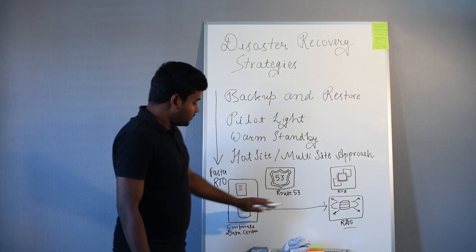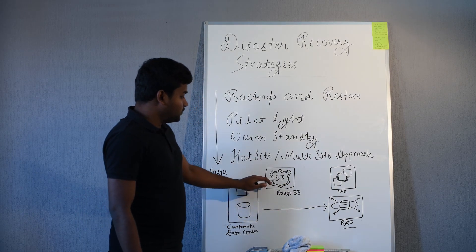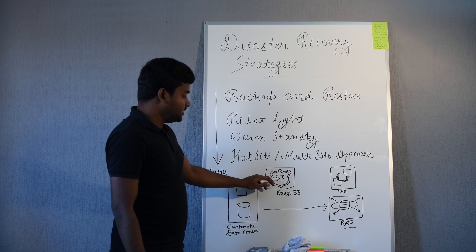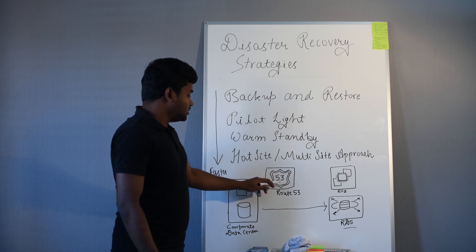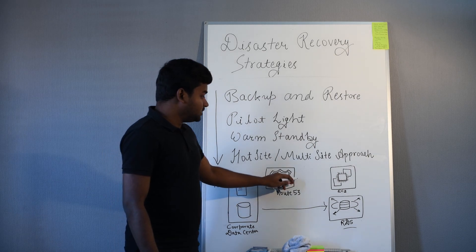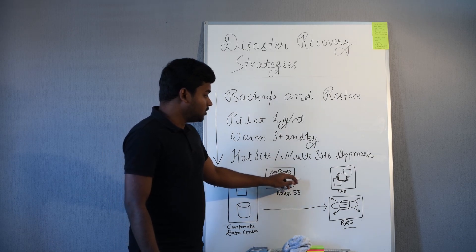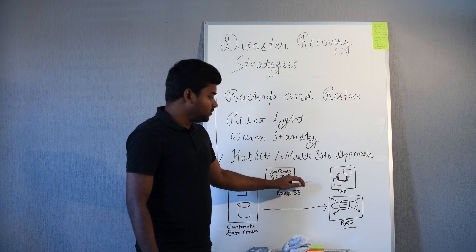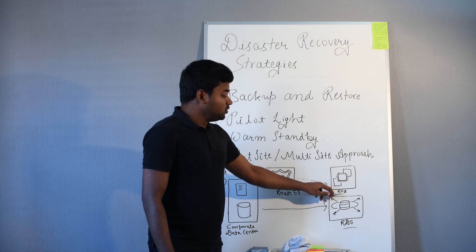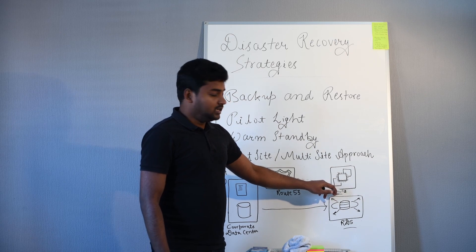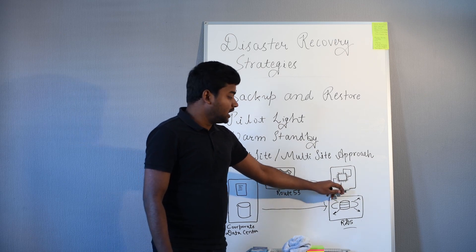In case of disaster, Route 53—which is an AWS service—will do the failover. It will just route the traffic. Route 53 doesn't spin off machines, but it will route the traffic. EC2 machines will spin off and connect to the RDS database.